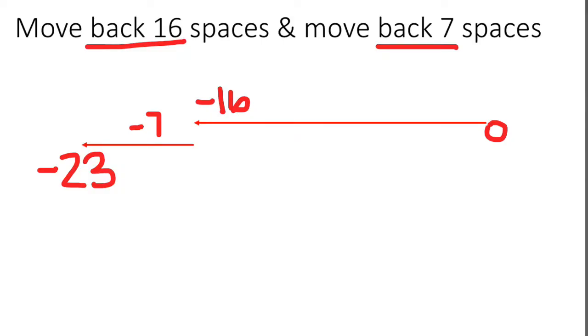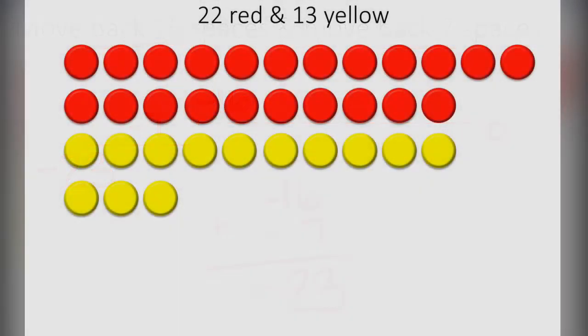Because again when the signs are the same we actually are going to add the numbers. In this case we are going to add 16 and 7 but we keep the negative sign. So we moved back a total of 23 places.